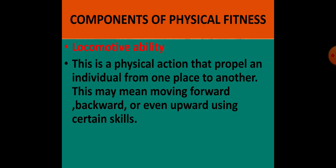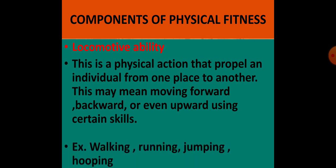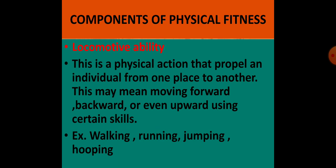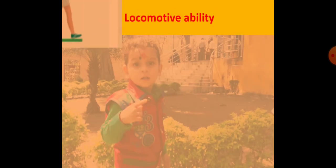The word locomotive comes from locomotion, meaning displacing the body from one place to another. Locomotive ability determines how a person displaces their position — forward, backward, upward, sideward. Examples include walking, running, jumping, and hopping. Every sports activity highly requires locomotive ability, which is essentially the displacement of the body.